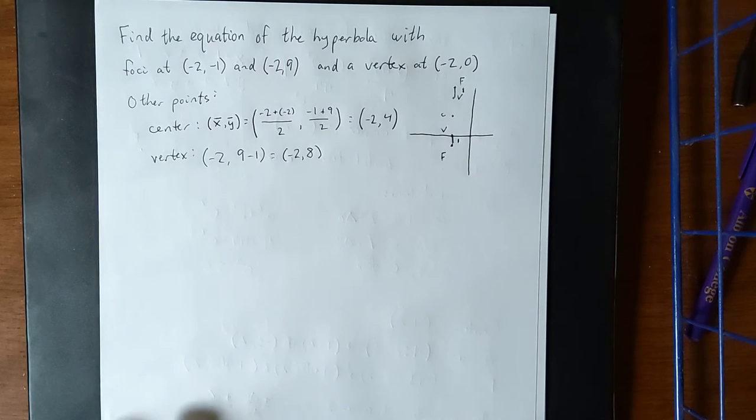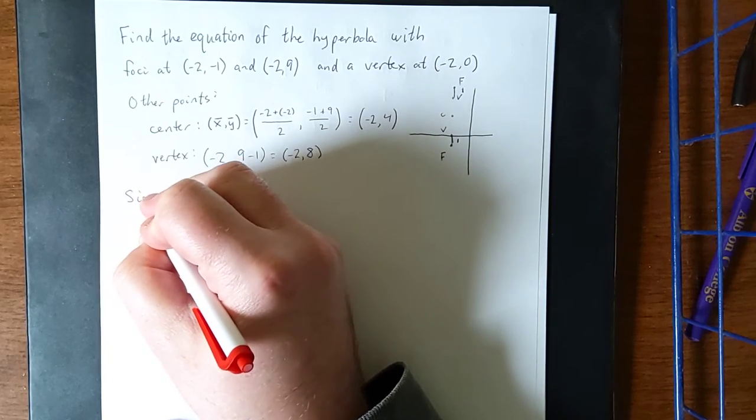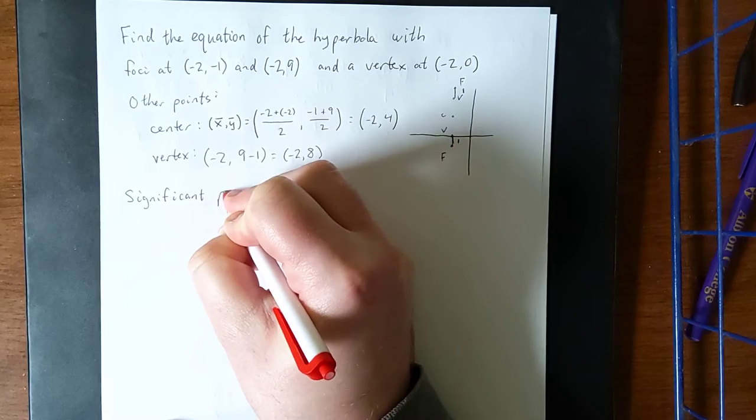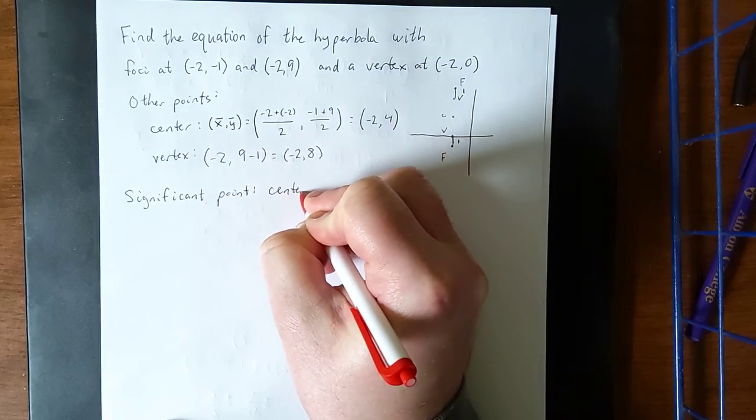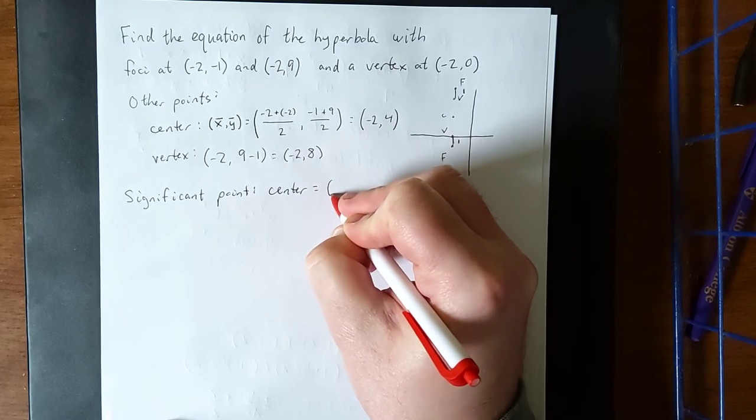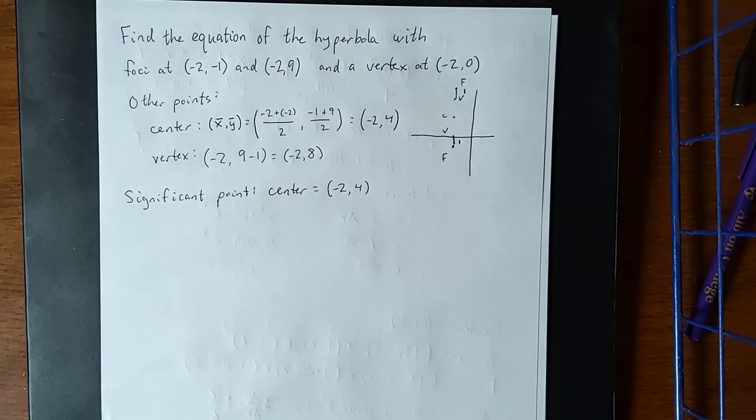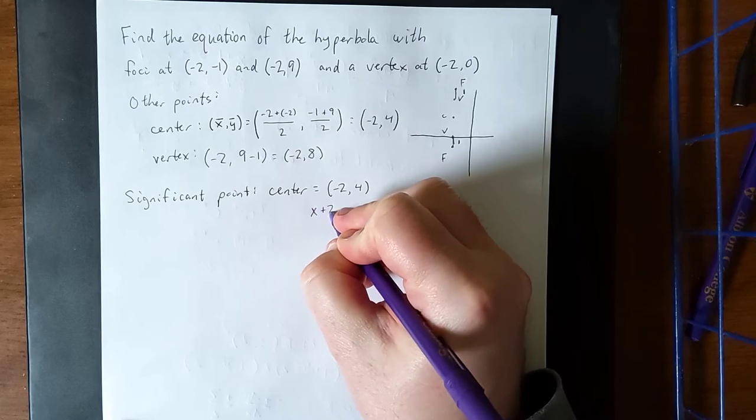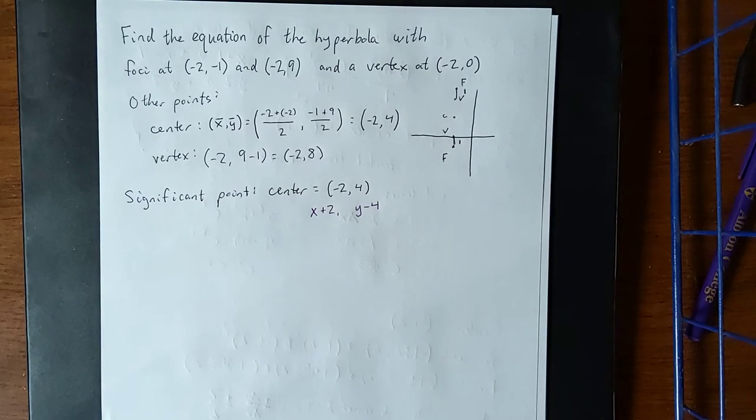Now that gives us all of the information that we need to go ahead and proceed with the same three things that we're going to use every time. First one will be the significant point. Significant point for us is the center, and we were able to figure that out already as being (-2, 4). That means as we're moving toward our final answer, I will expect to see that there will be an (x + 2) and a (y - 4) as part of the final answer.